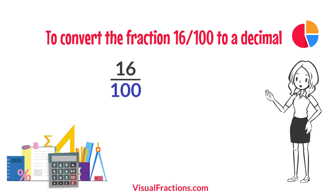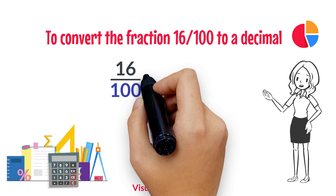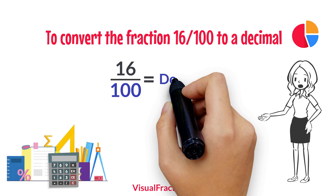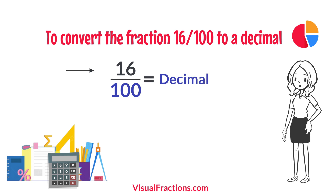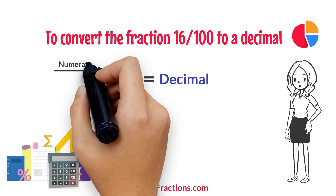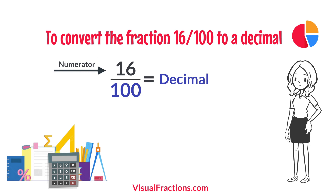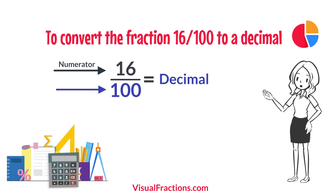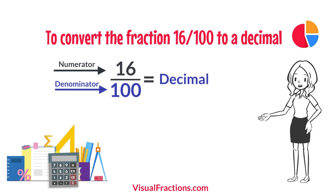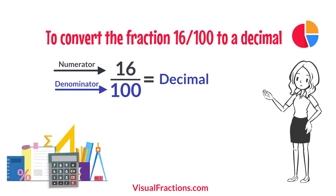To convert the fraction 16 one-hundredths to a decimal, all we need to do is divide the numerator, the top number, by the denominator, the bottom number. So, we simply divide 16 by 100.